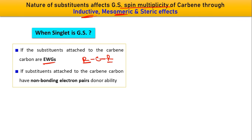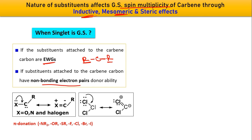Another case where singlet is the ground state: when substituents attached to the carbene carbon have non-bonding electron pairs and pi-donor ability. For example, X may be oxygen, nitrogen, or halogen — all have lone pairs, making pi-donation possible. Groups such as NR2, OMe, OEt, SR, fluorine, chlorine, or bromine can all make singlet the ground state.